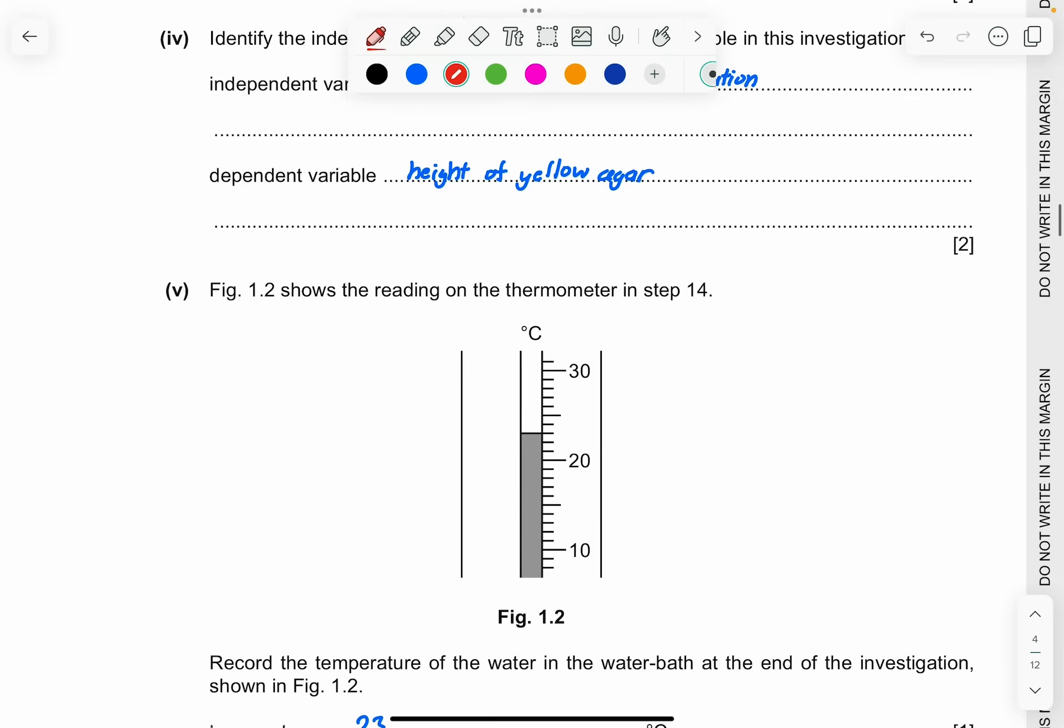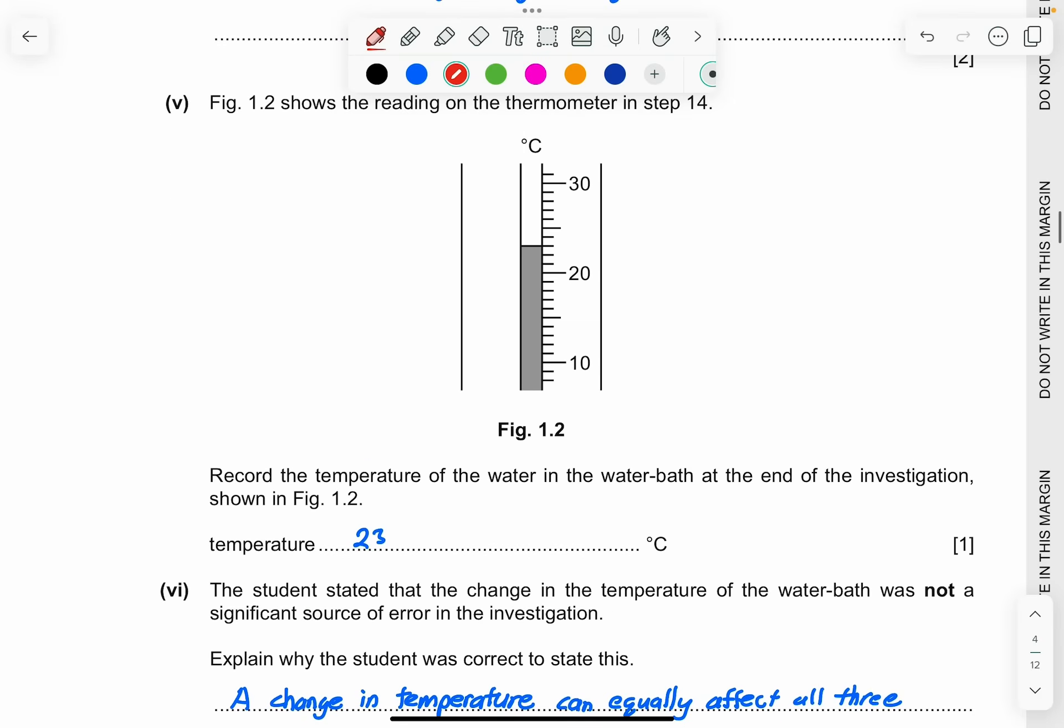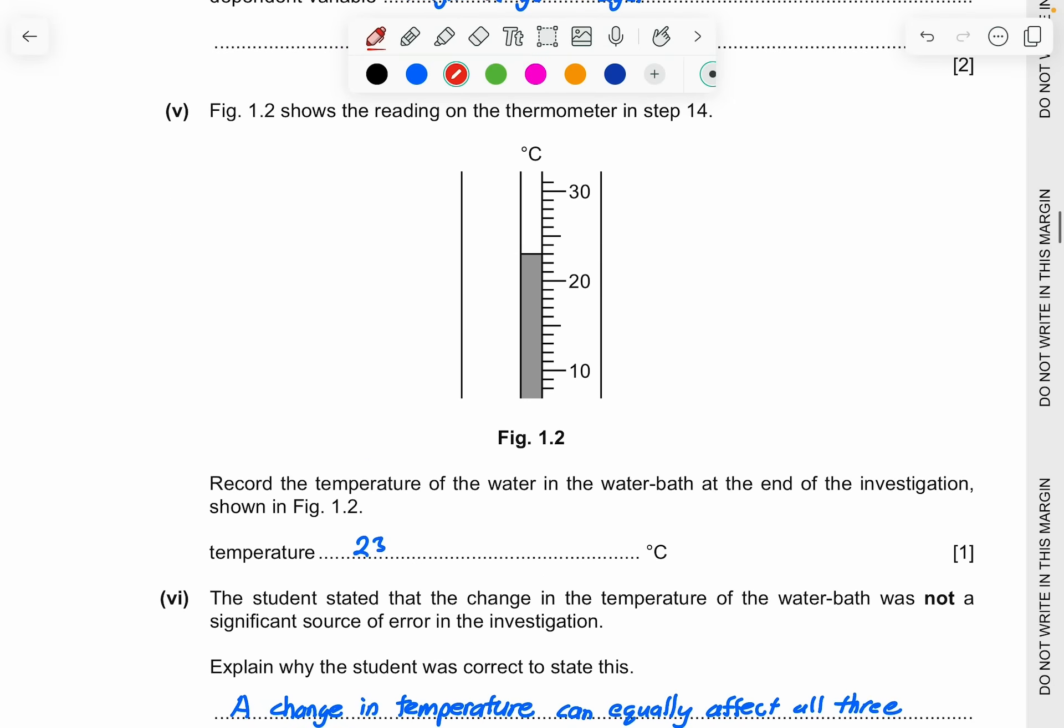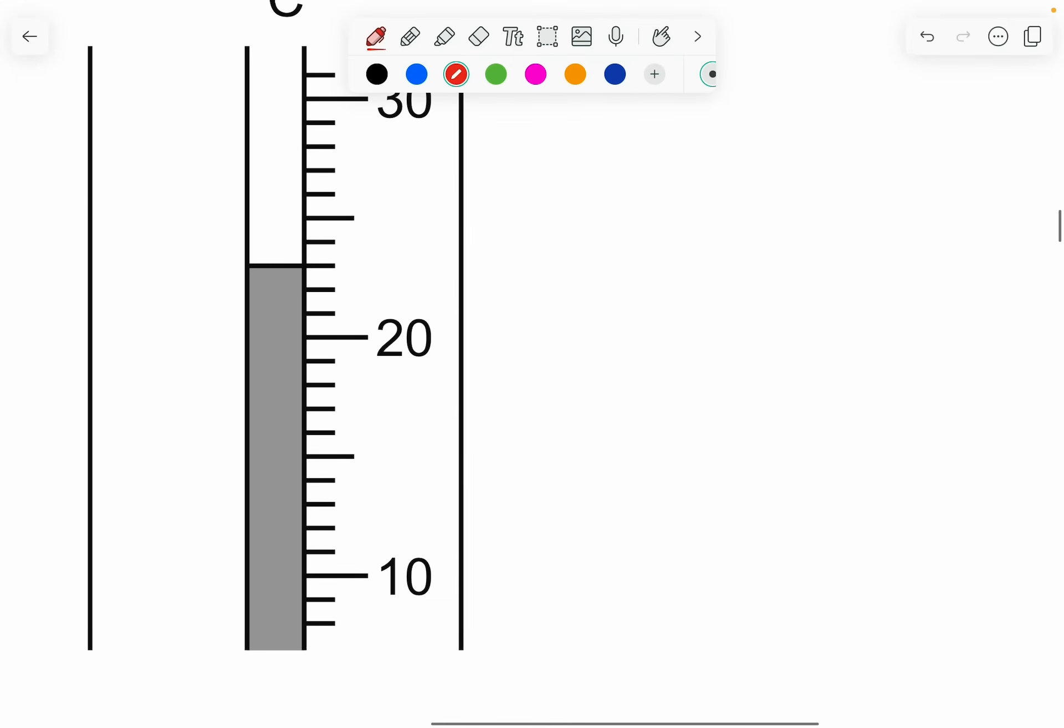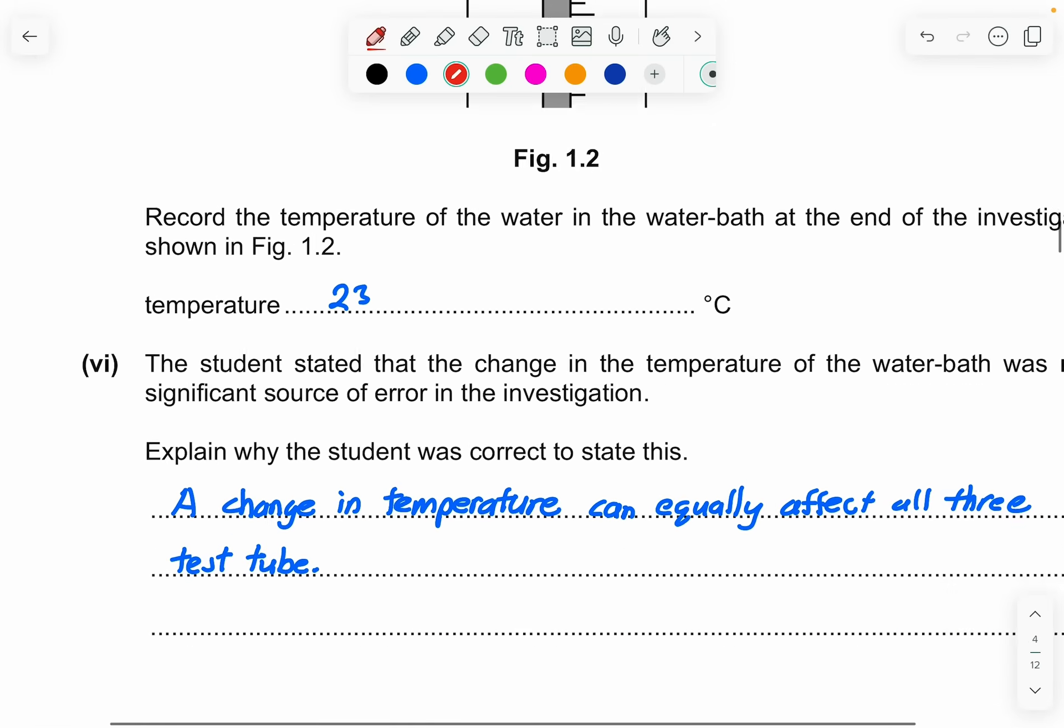So now let's look at part 5. Figure 1.2 shows the reading on the thermometer in step 40. Record the temperature of the water in the water bath at the end of the investigation shown in figure 1.2. So the answer here is 23. So this is 1, 2, this is 3. So the answer is 23.